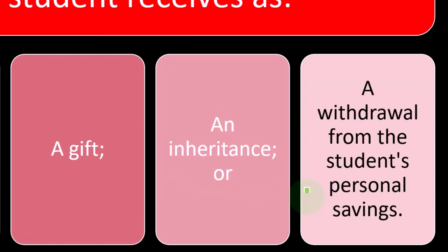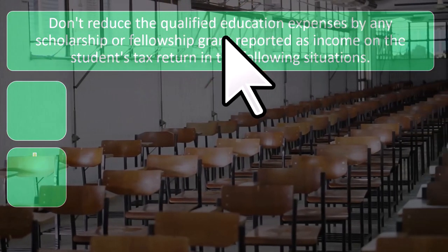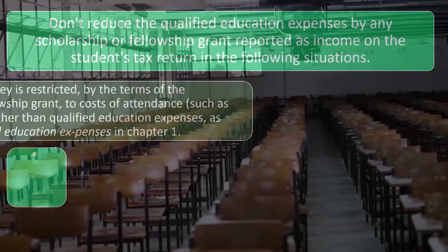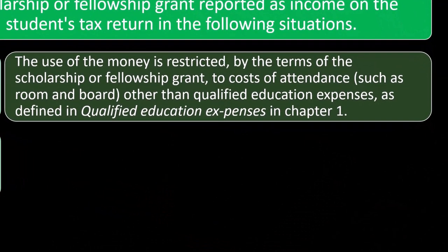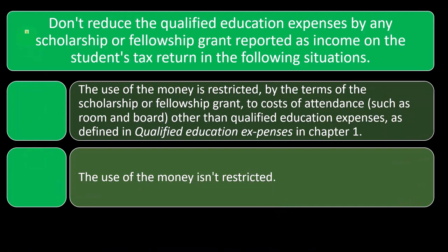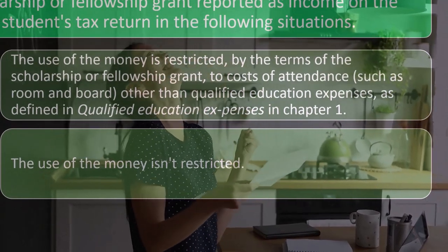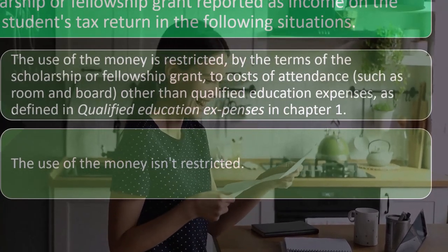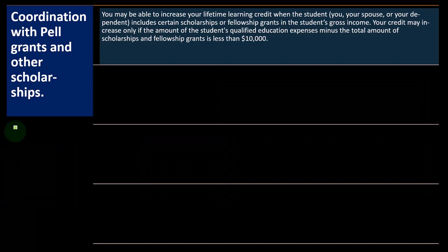A withdrawal from the student's personal savings also doesn't count because that savings clearly isn't free money — you got it through a gift, inheritance, or you earned it. Also, don't reduce the qualified education expenses by any scholarship or fellowship grant reported as income on the student's tax return in these situations: the use of the money is restricted by the terms of the scholarship or fellowship grant to costs of attendance such as room and board, other than qualified education expenses; or the use of the money isn't restricted. If you're paying taxes on the grant, then the expenses paid with that money could potentially go toward the lifetime learning credit.